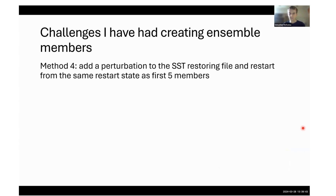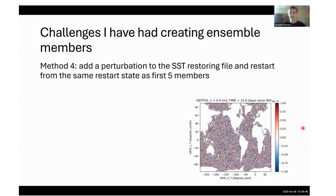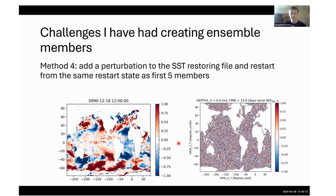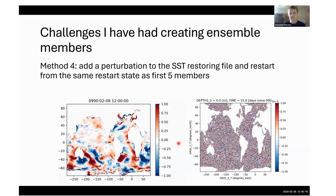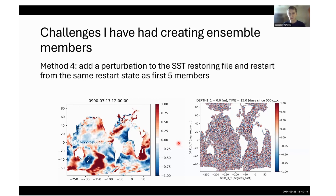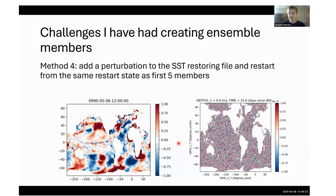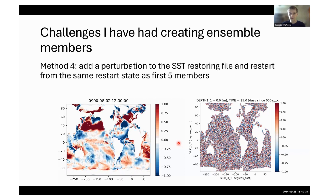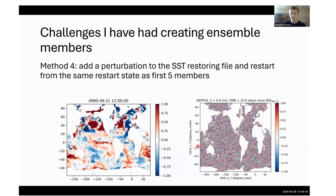We instead added the perturbation to our SST restoring file — only the Pacific region has that perturbation. This animation shows how the ensemble members very quickly diverge within the first month. We ran the 18 members for each experiment from the same five restarts, but adding a different perturbation each time. This is maybe a little clearer — this is day one SST and then day 31, showing how the atmosphere responds.